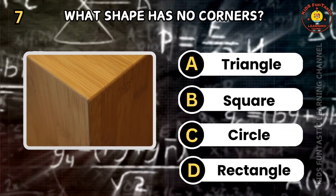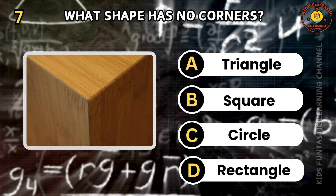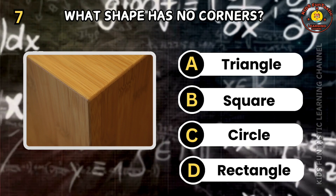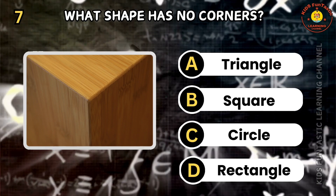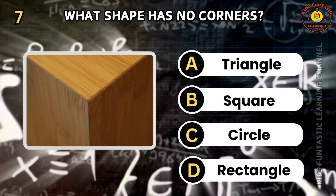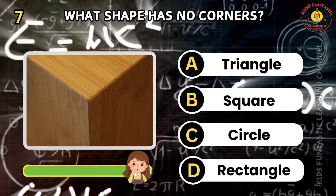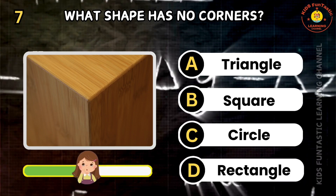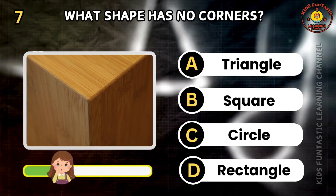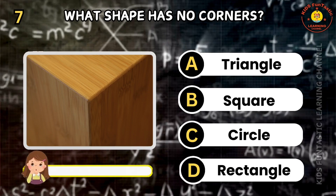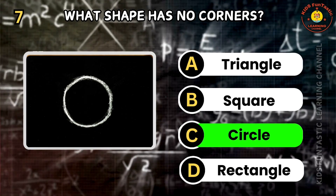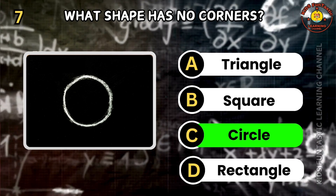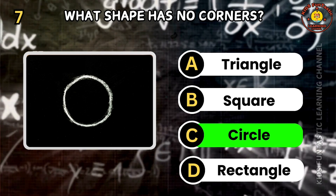Question 7. What shape has no corners? A: triangle, B: square, C: circle, D: rectangle. Well done! The correct answer is C. A circle has no corners.